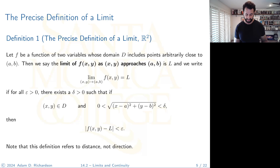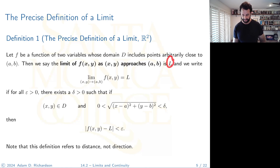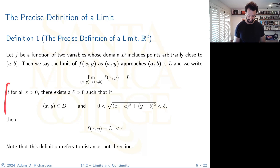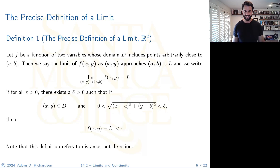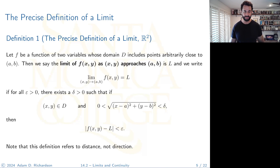We say the limit as (x, y) approaches (a, b) of f(x, y) equals L, and this occurs if and only if: for all epsilon greater than zero, there exists a delta greater than zero such that if (x, y) is in the domain and the distance between (a, b) and (x, y) is smaller than delta, then the distance between the output and the limit is smaller than epsilon.